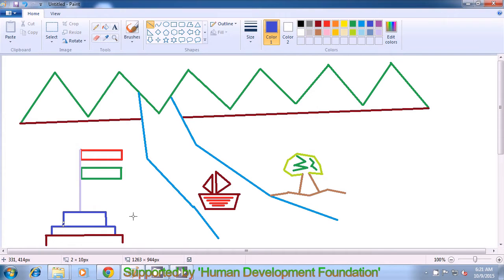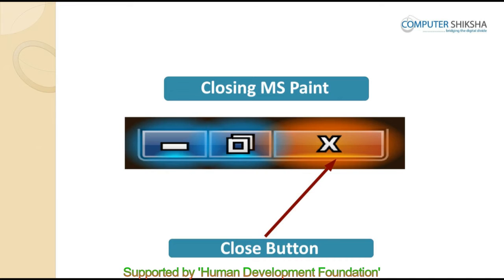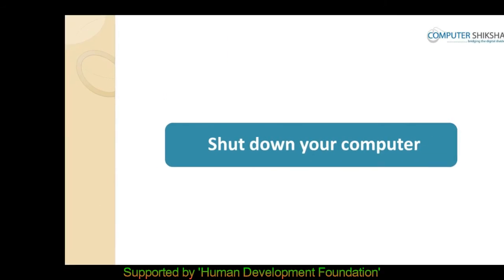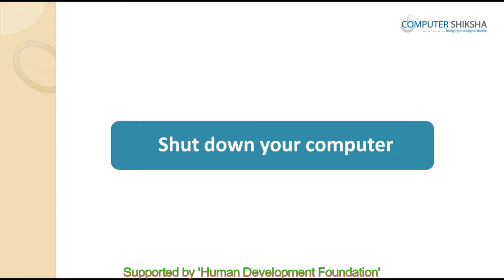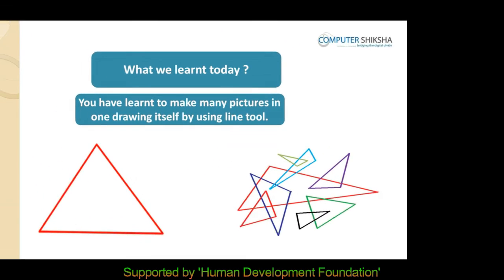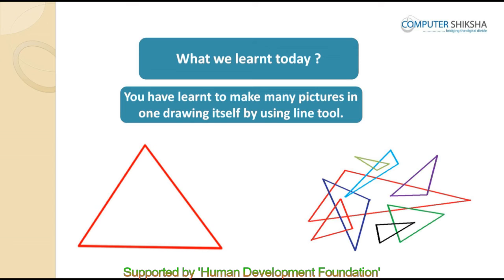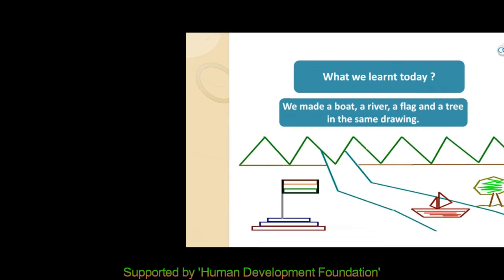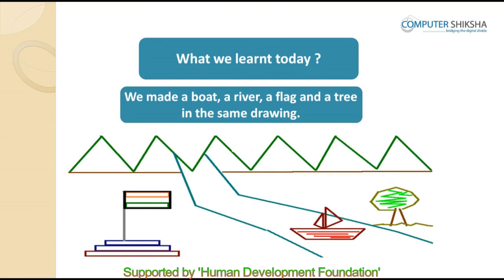Remember, if we want to erase the whole drawing, we can erase it by using select all. So we will end today's class now. All of you will close your files and shut down your system. All students need to shut down their systems in the correct method that we have all learned by now. If any of you ever shut down your system by directly pressing the power button, your system can get corrupted and stop working. So all of you need to remember the correct method of shutting down the system. In today's class, all of you have learned to make many pictures in one drawing itself by using the line tool — we made a triangle, and then we made a boat, a river, a flag, and a tree in the same drawing.